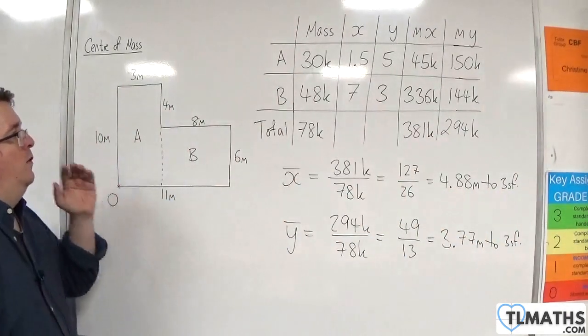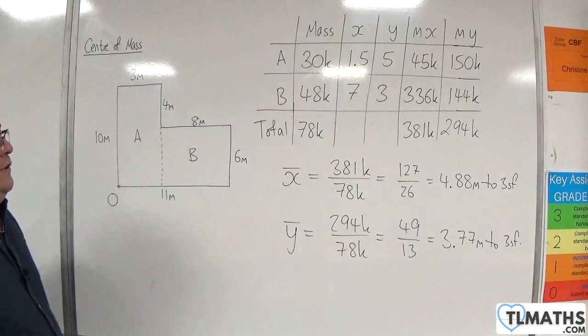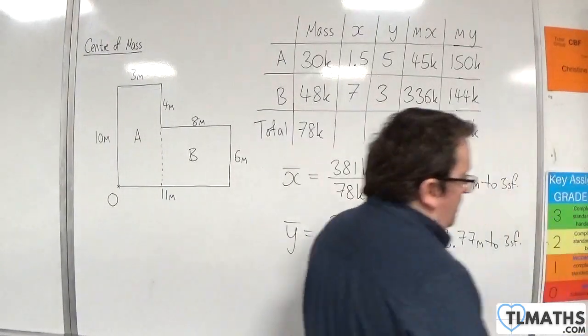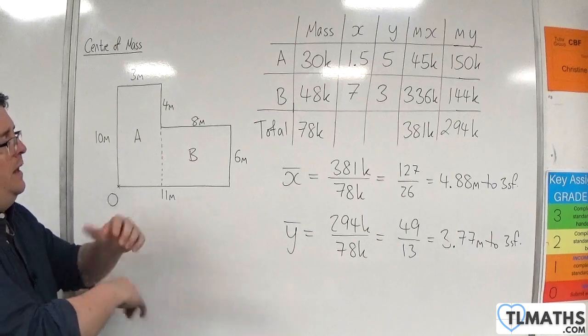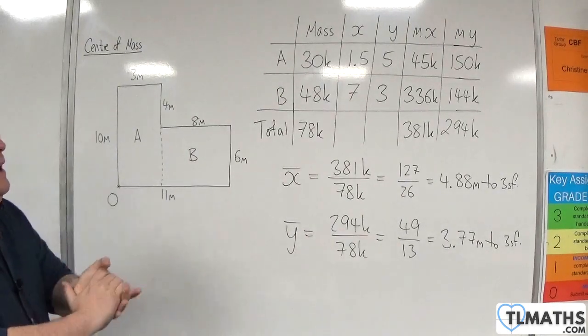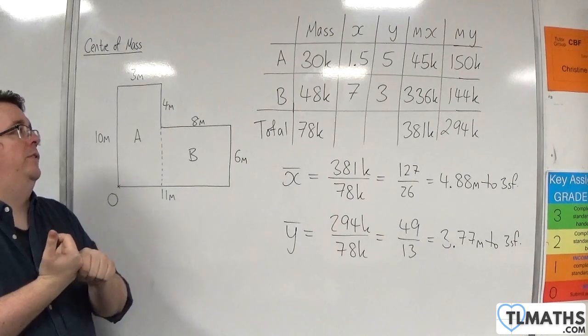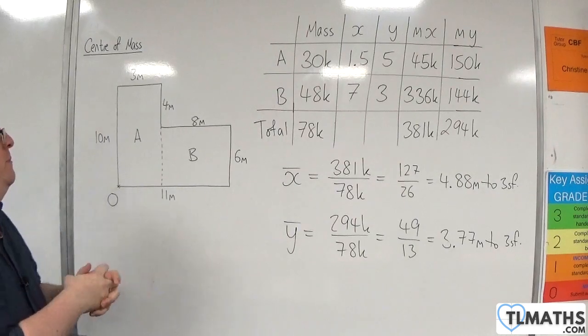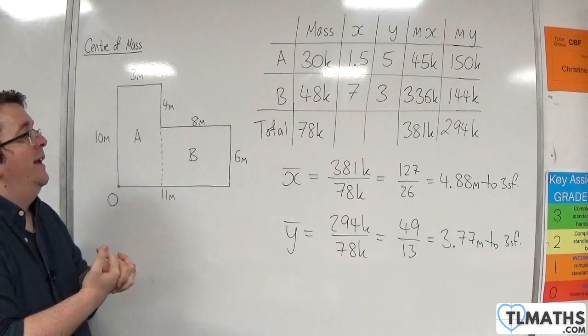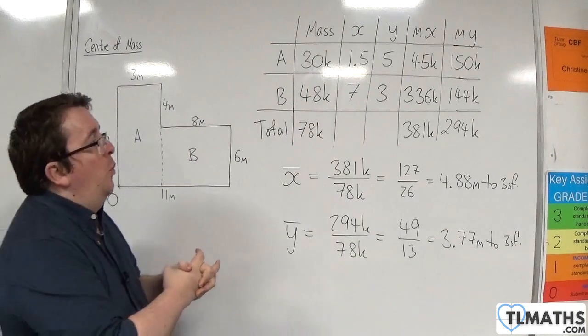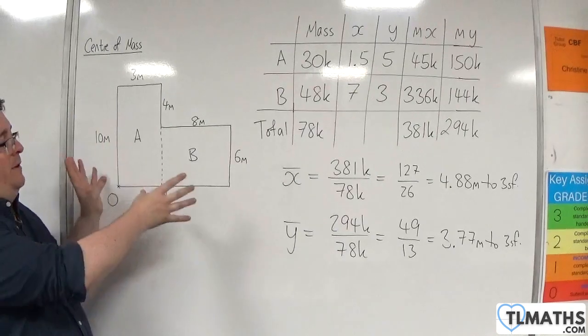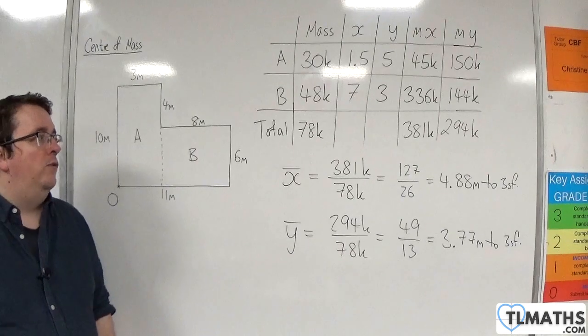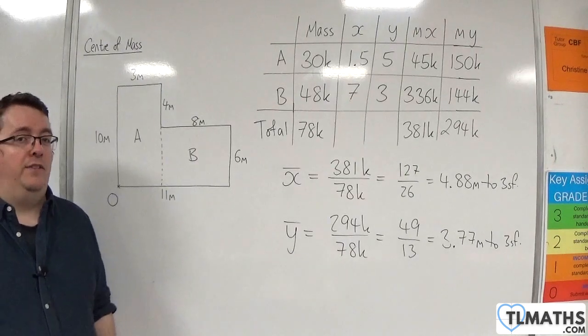Now, you might be thinking, is there any point in including the K's here? Because they're all going to cancel out anyway. And that would be true. They should all cancel out. Now, the point of including it is because you could have situations where you have laminas of different densities, so different masses, which you might need to take account of. So this is a good way of remembering that the two laminas that you're working with are of the same material. So I would always recommend including the K, and I'm going to continue including it in the videos.